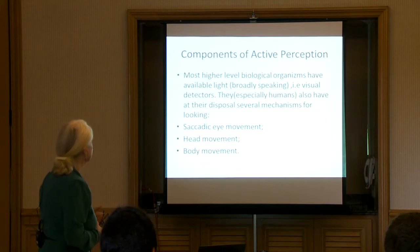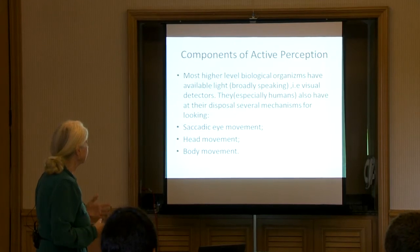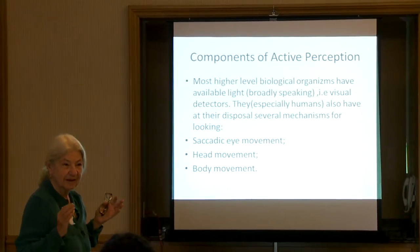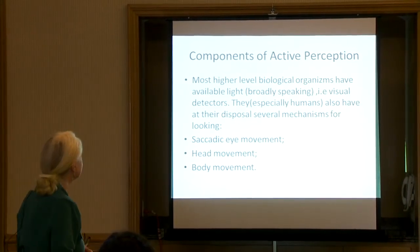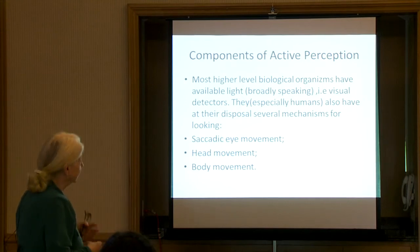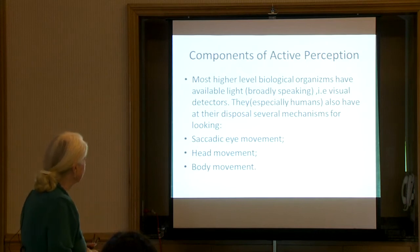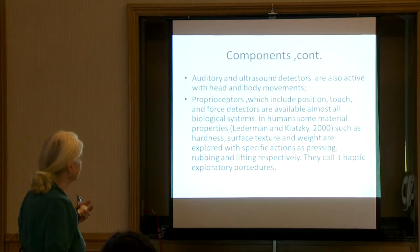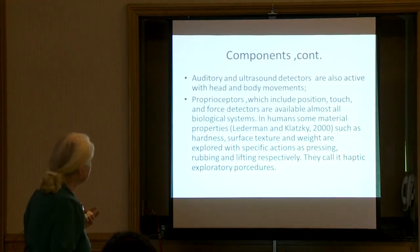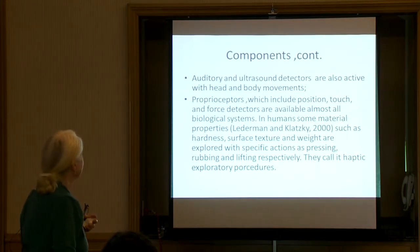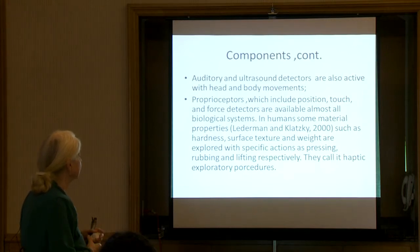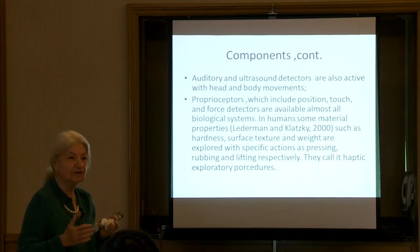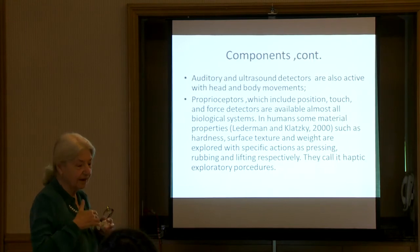The components of active perception: most higher-level biological organisms have available light, broadly speaking — visual detectors. Especially humans, though not all biological systems have a light detector; some use something else, like bats with ultrasound. Those who have visual detectors have saccadic eye movement, head movement, and body movement — and right there comes the control part. Auditory and ultrasound detectors are also active with head and body movement. Proprioceptive receptors, which are on your skin, include position, touch, and force detectors, and are available in almost all biological systems — in fact much more primitive than the visual system. The eye is evolutionarily derived from the skin.